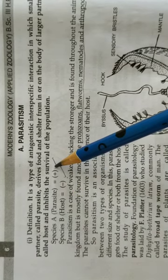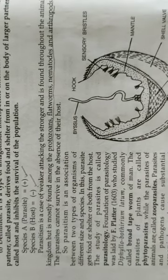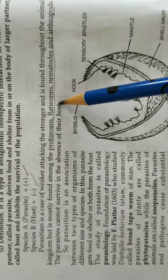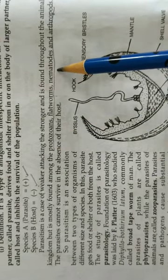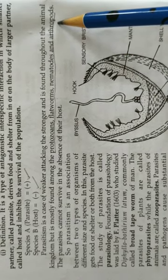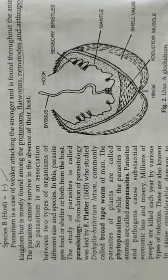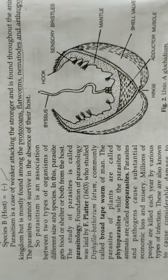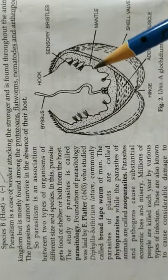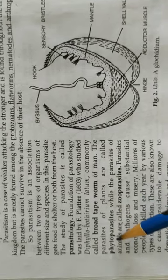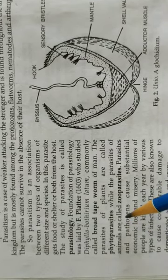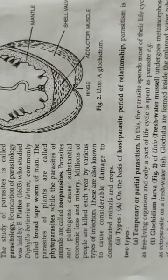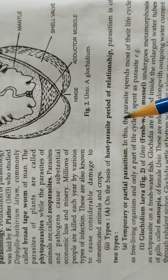Parasitism is seen in many animals. Most parasites we study belong to protozoa, platyhelminthes (flatworms), nematodes (roundworms), and arthropods (animals with jointed appendages). The study of parasites is called parasitology. Parasites are not only found in animals — we also see parasitism in plants. Plant parasites are called phytoparasites and animal parasites are called zooparasites. There are different categories of parasitism on the basis of the host-parasite relationship.